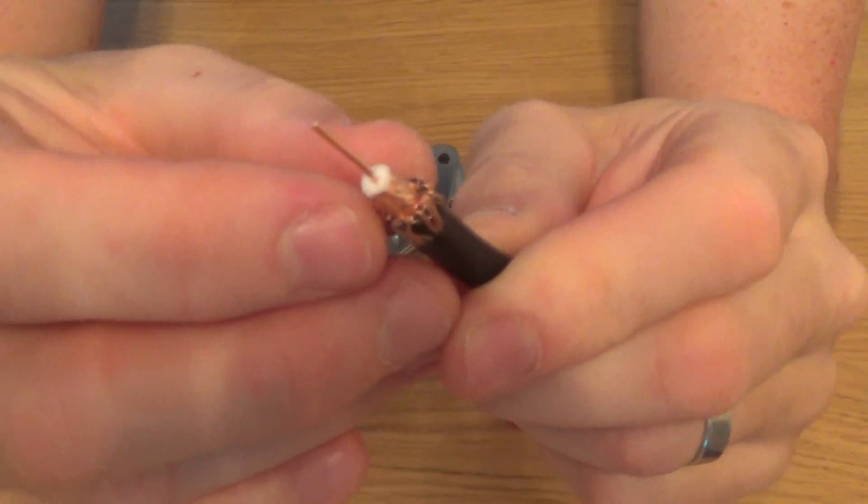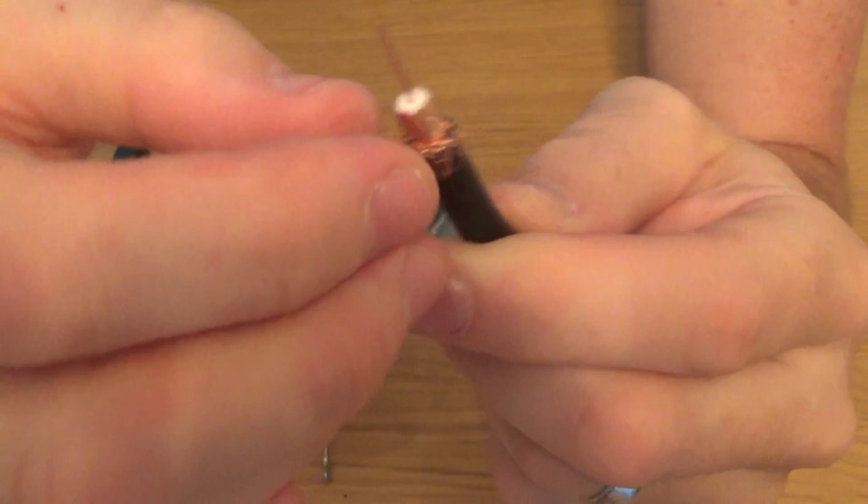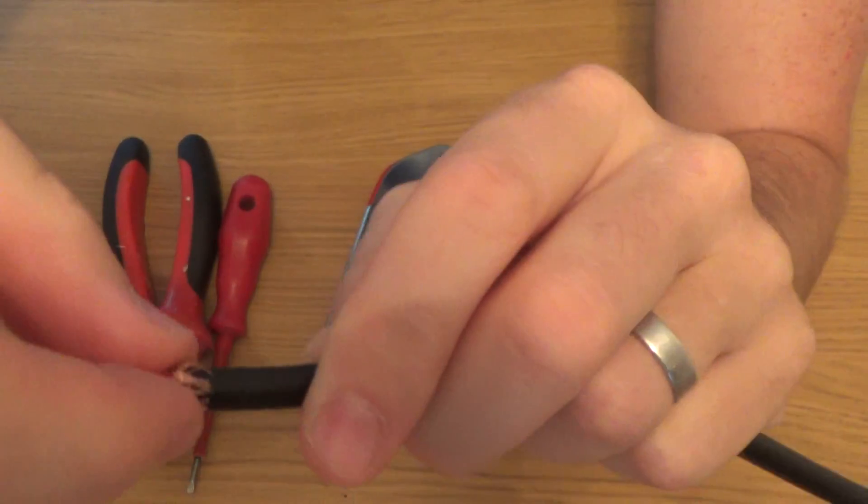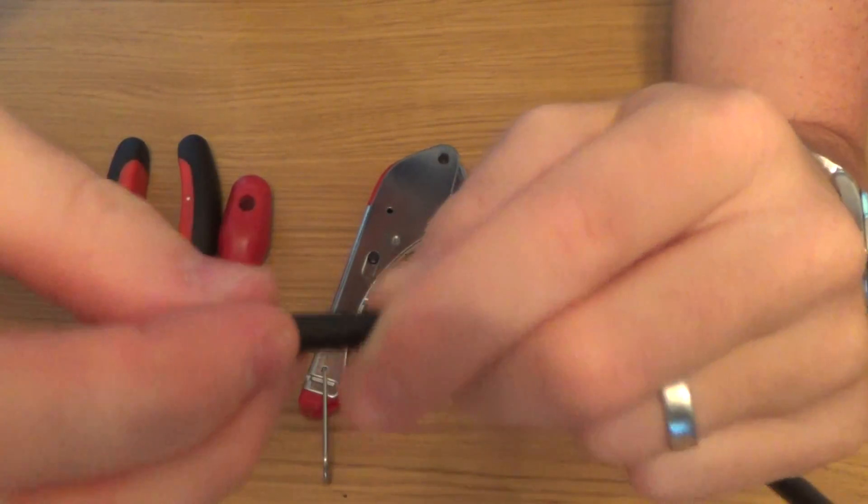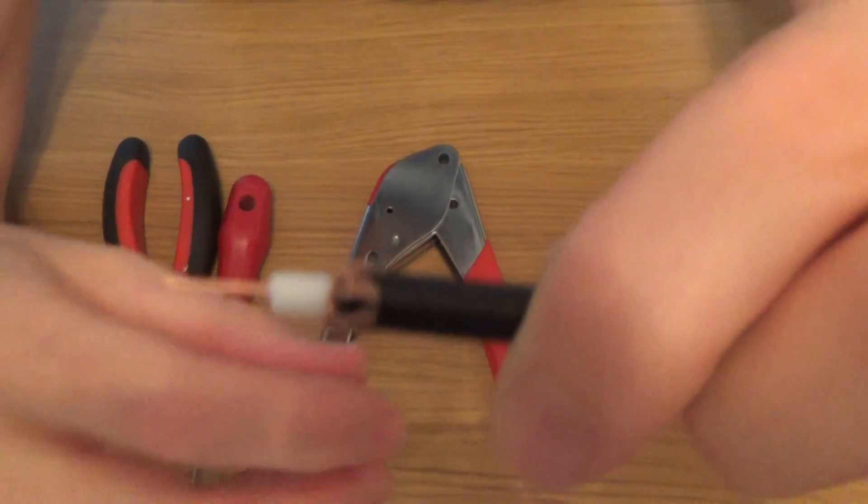We then need to take this foil off. So peel the foil off so you should be left with something like that.